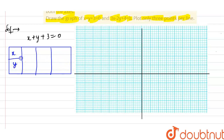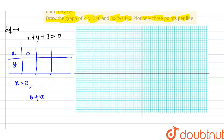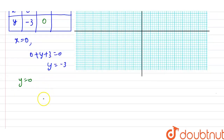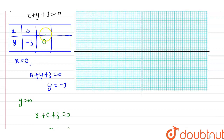Now moving further, I'm going to solve by taking some points. My first equation is x + y + 3 = 0. If I take x = 0, substituting into the equation: 0 + y + 3 = 0, so y = -3. Now putting y = 0: x + 0 + 3 = 0, so x = -3.